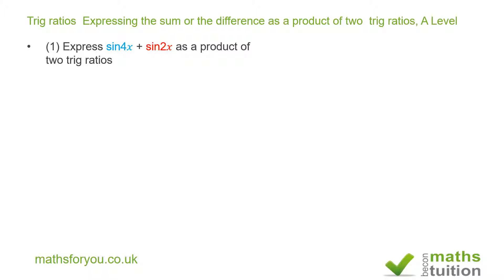What I'm going to do is write 4x and 2x using two terms that are the same for both. What comes to mind is to express 4x as 3x + x, and 2x as 3x - x. So now we have sin(3x + x) and sin(3x - x).